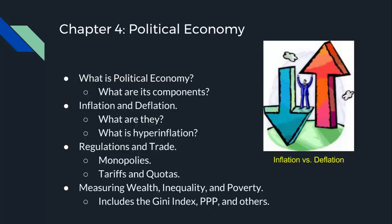Then we get into different measurements of wealth, equality, and poverty. We start with purchasing power parity, which attempts to estimate the buying power of income in each country by comparing similar costs such as food or housing. Then we get into the Gini index, a mathematical formula that measures the amount of economic inequality in a society. Complete equality is given a Gini ranking of zero, and complete inequality a ranking of 100. Sweden has a current ranking of 23, while the United States sits at 45. Other methods of measuring wealth include gross domestic product (GDP) and the Human Development Index.